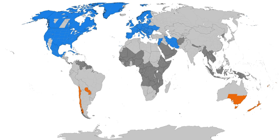Willett lobbied for the proposal in the UK until his death in 1915. Port Arthur, Ontario, was the first city in the world to enact DST on July 1, 1908. This was followed by Orillia, Ontario, introduced by William Sword Frost while mayor from 1911 to 1912.